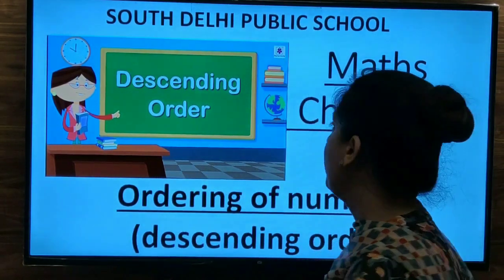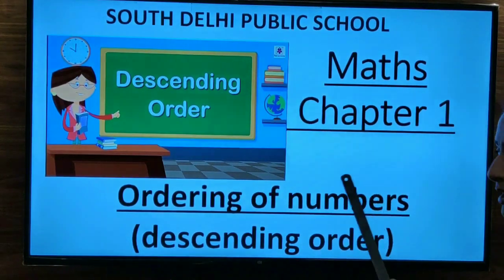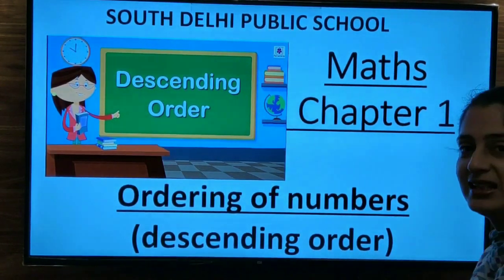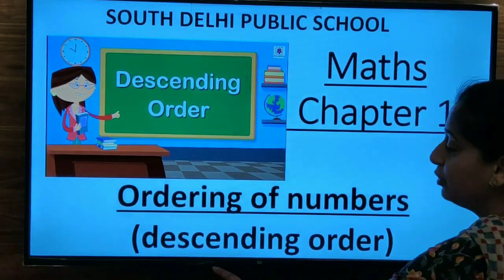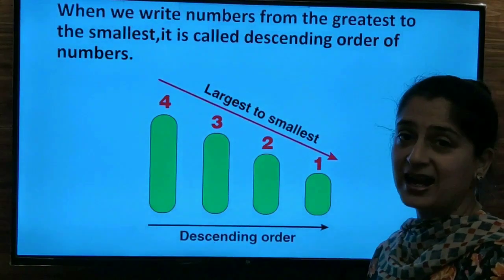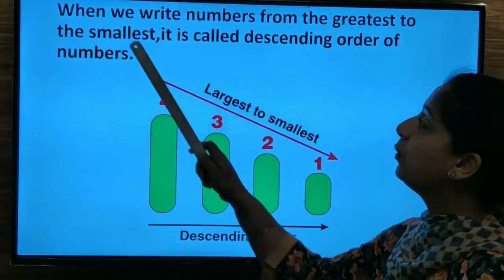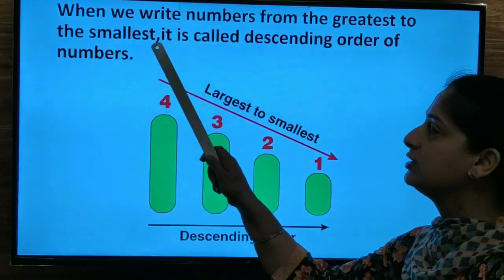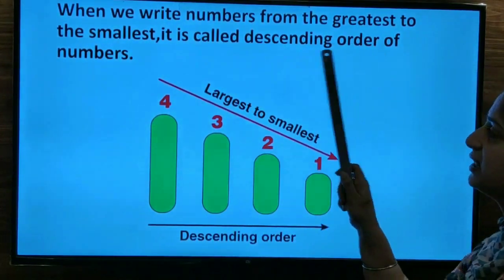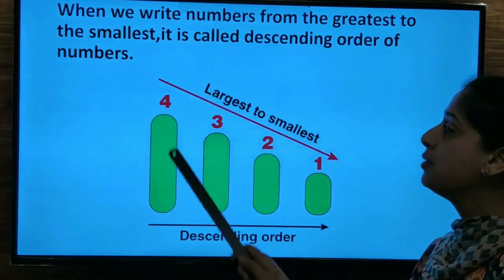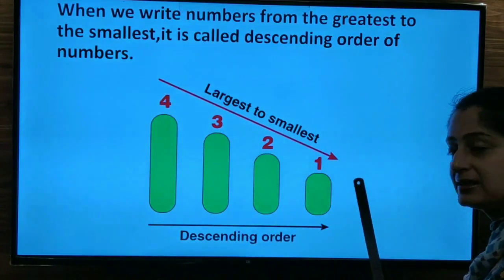So let's begin today's topic. Maths chapter 1. Ordering of numbers. Descending order. Earlier we did ascending order. Now we are going to do descending order. Now let's understand what is descending order. When we write numbers from the greatest to the smallest, it is called descending order of numbers. That is, we move from the largest to the smallest.